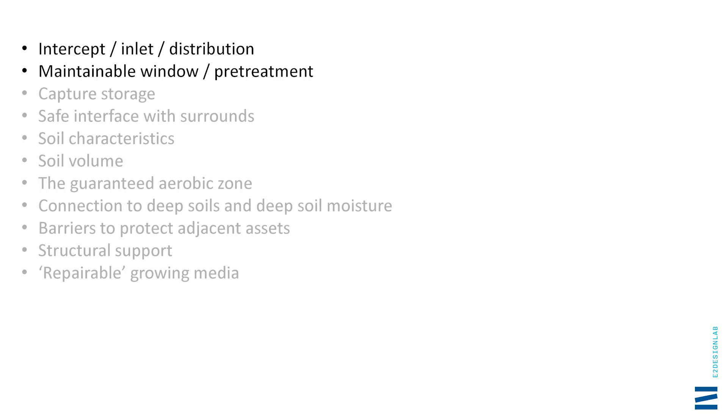The first two features are about how we intercept the water and get it to the tree — often done together. For example, your inlet may be a grate to keep out litter and debris, or a permeable paving which also keeps out sediment. What I mean by a 'maintainable window' is particularly about where sediment gets caught, because as Chris was saying, this can seriously compromise the opportunity for water to infiltrate into the tree growing media and will result in a lot of bypass.